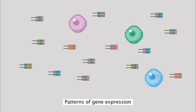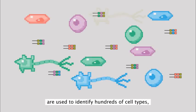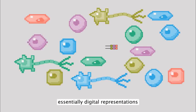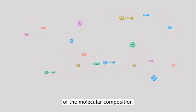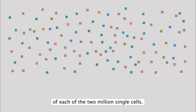Patterns of gene expression are used to identify hundreds of cell types, essentially digital representations of the molecular composition of each of the two million single cells.